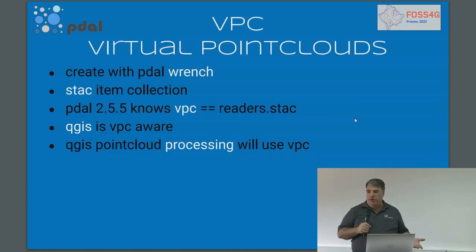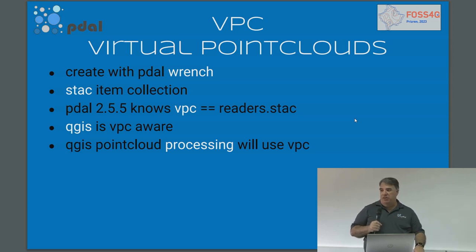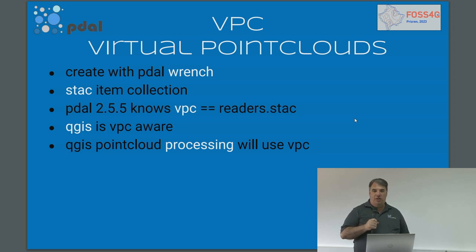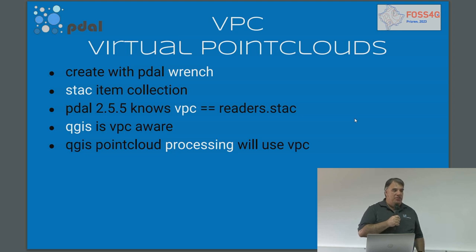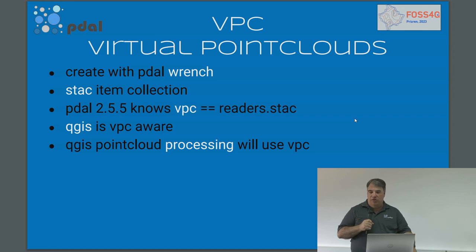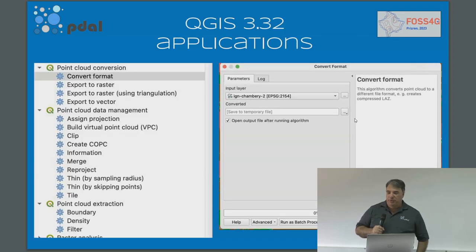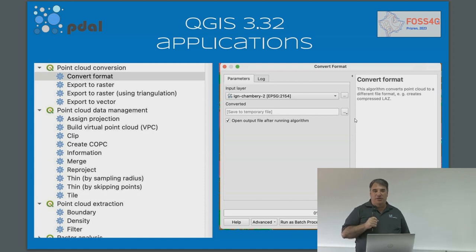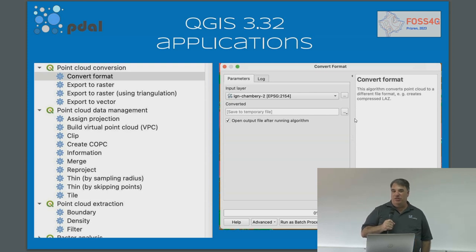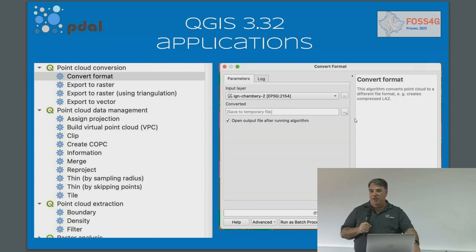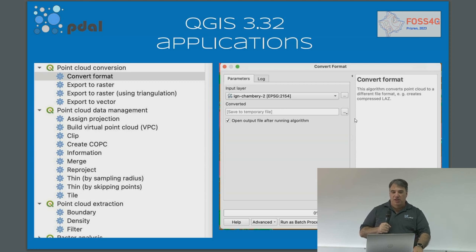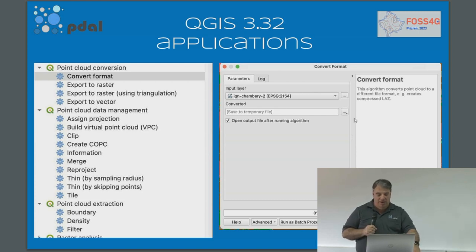Virtual point clouds can be created with Poodle Wrench — they are just a STAC item collection. You can create STAC item collections of point clouds and that's a virtual point cloud. It's just an easier way of referring to a collection of point clouds as a single unit, as a cloud-native geospatial organization. QGIS, in its latest release, is now VPC or virtual point cloud aware. QGIS point cloud processing will be using these VPCs and Poodle Wrench. The latest release now has the ability to process point clouds natively in QGIS using PDAL. So you have a graphical user interface, higher-level interfaces like Poodle Wrench, and the base underlying library.